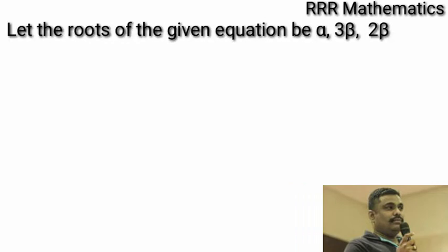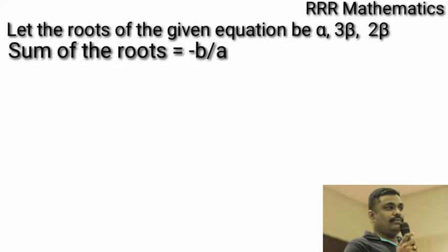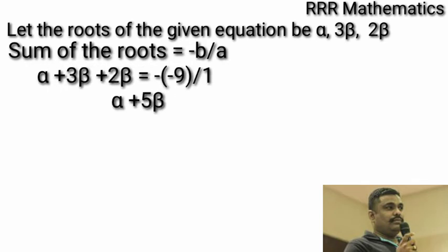Find the sum of the roots. Sum of the roots equal to minus b by a. That is, alpha plus 3 beta plus 2 beta which is equal to minus of minus 9 divided by 1. Which gives alpha plus 5 beta equal to 9.